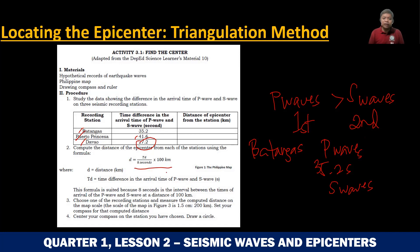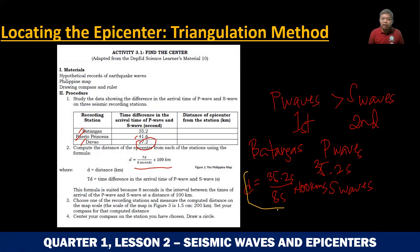Using this formula: distance is equal to the time difference. For example, in Batangas: 35.2 seconds divided by 8 seconds, times 100 kilometers. They will know the distance of the epicenter from that station. If we compute this, the distance from the Batangas station to the epicenter is 440 kilometers. The same formula is used for Puerto Princesa and Davao.